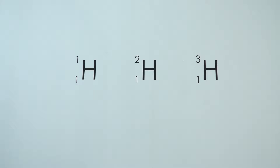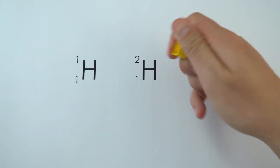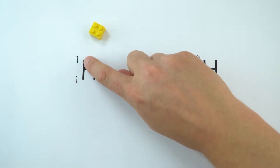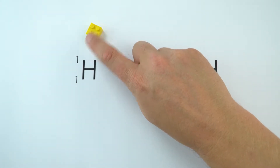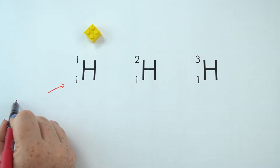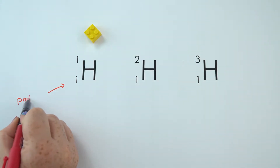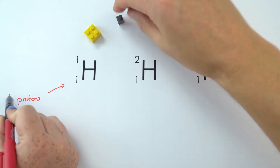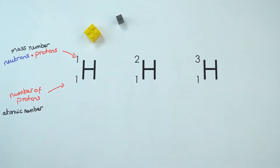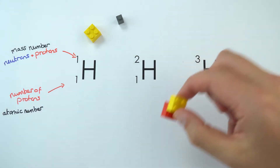What we have here are three isotopes of hydrogen, the simplest element. The first one here is hydrogen — it has one proton in the middle and a total of one particle in the nucleus. This is the simplest form of hydrogen and is what most of the universe is made of. If it's an atom, it also has one electron orbiting that nucleus.